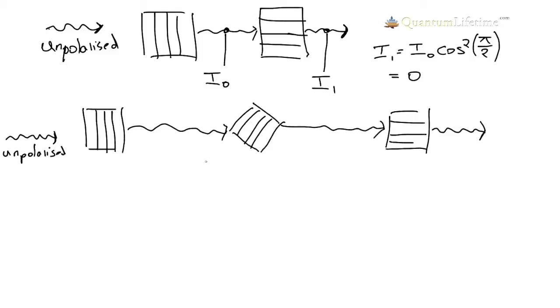So we want to know, the intensity here of the polarised light coming through the first filter is I nought. Let's call this I1. And let's call this I2 and apply Malus's law.